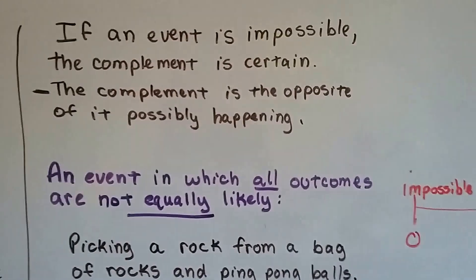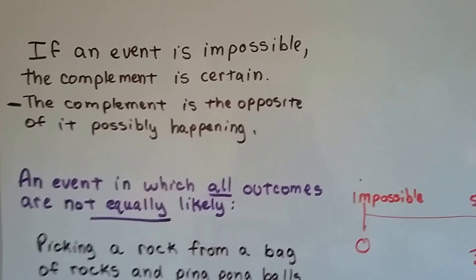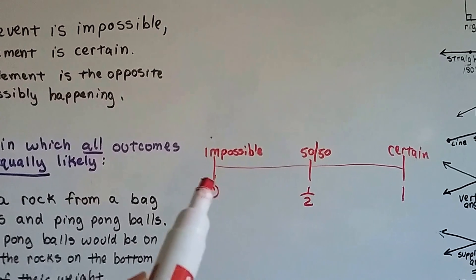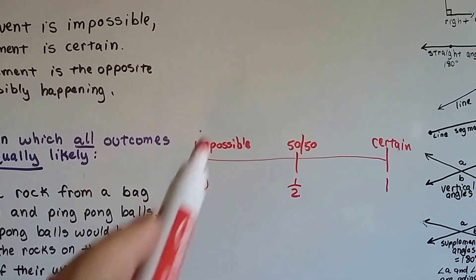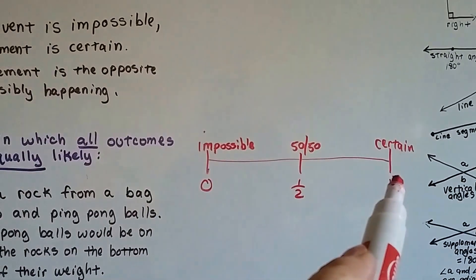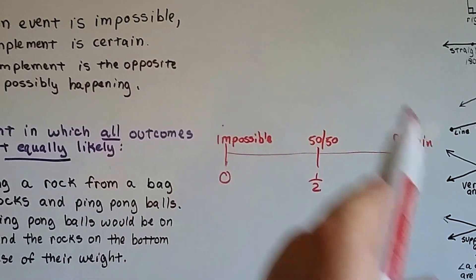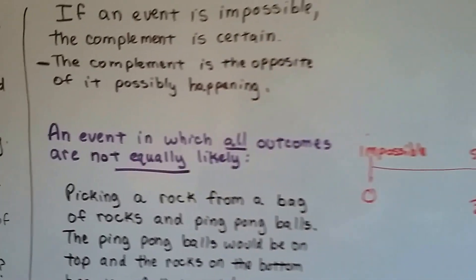If an event is impossible, then the complement is certain. The complement is the opposite of it possibly happening. If an event is impossible, its opposite—the complement—is certain. And if an event is certain, its complement is impossible, because they're opposites of each other.